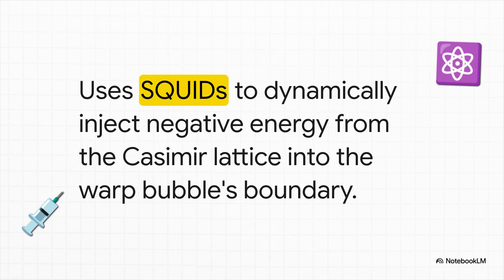That's where the exotic matter injection system, or EMIS, comes in. This is what turns that dent into a real bubble. It uses these ultra-sensitive devices called squids to basically paint the edges of that dent with the negative energy we got from the Casimir effect. It's this precise injection that sustains the bubble and gives it its shape.